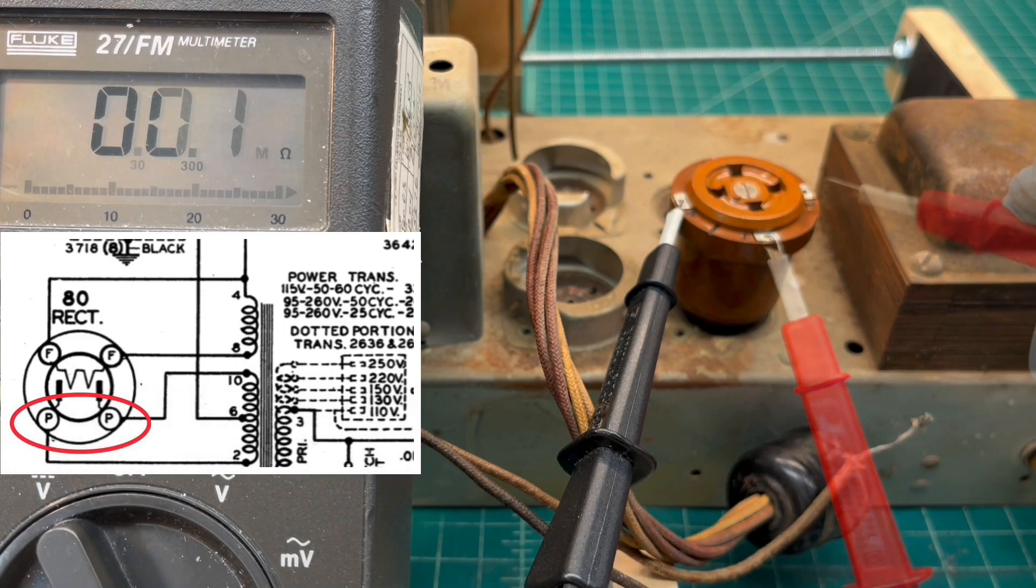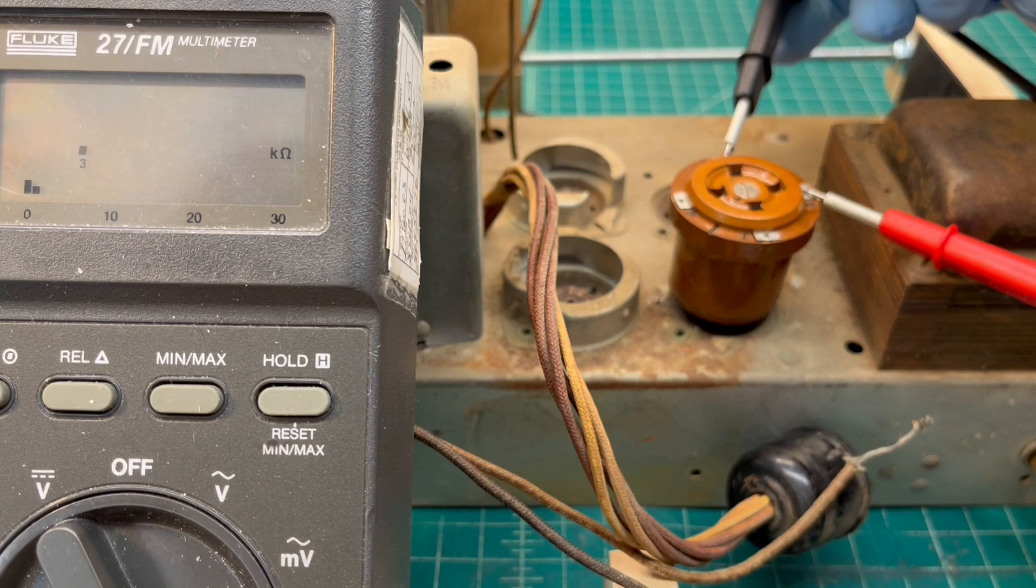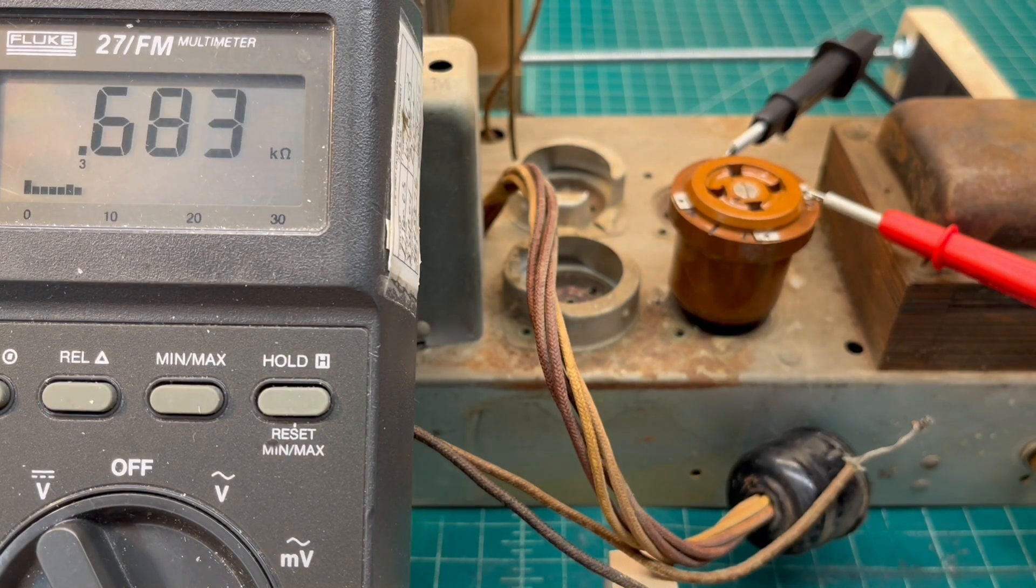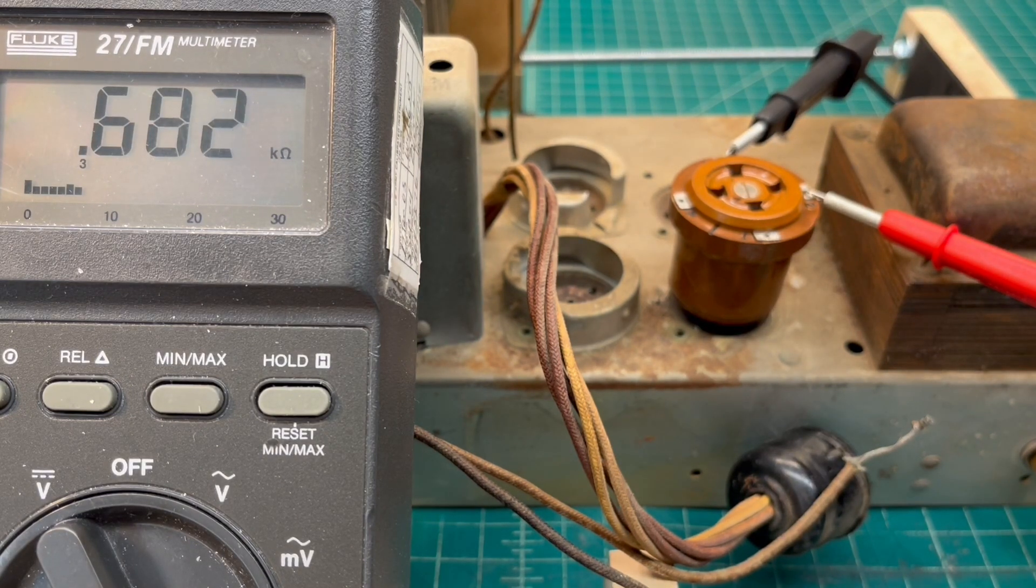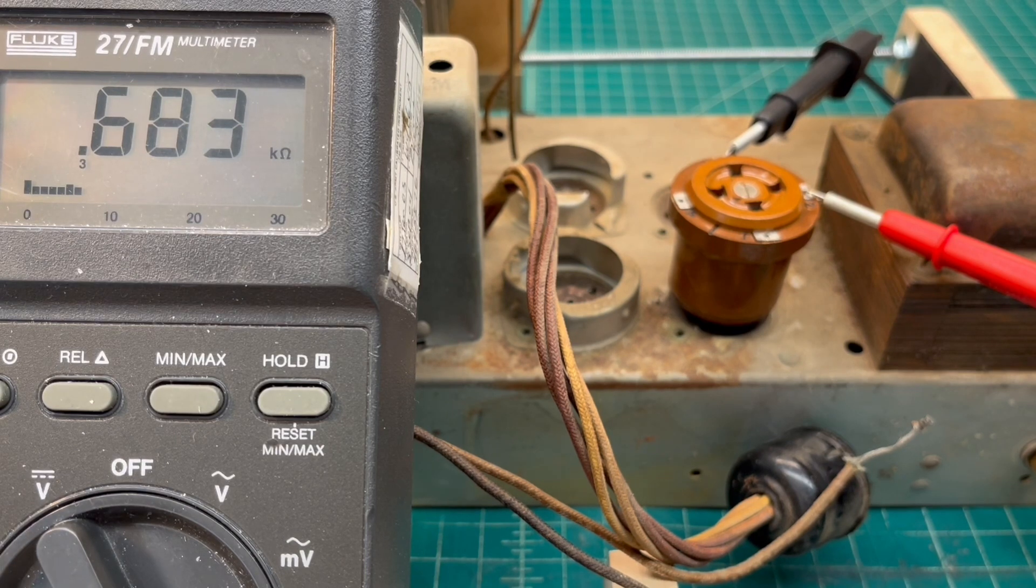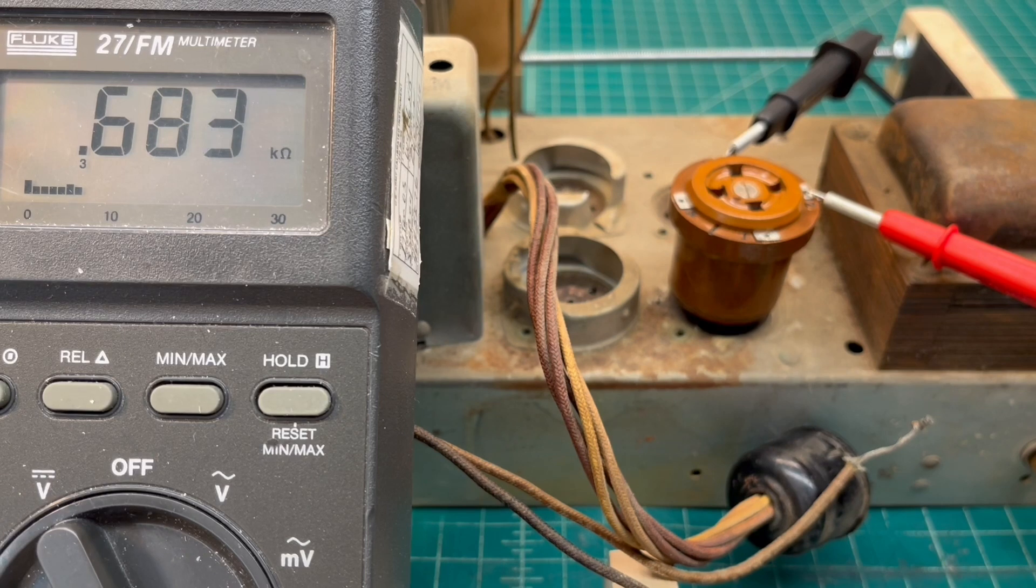Okay, you can see we're reading 682 ohms. So theoretically we can just split that in half - that's what we would expect to see from each winding back to center tap, plus or minus 10%.